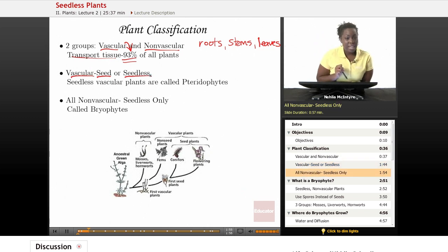Nonvascular plants, however, never have seeds, so they're seedless only plants. Now, vascular seedless plants have a special name, and they're called pteridophytes, and we'll talk about those later. And nonvascular plants are called bryophytes, and we'll discuss those also.